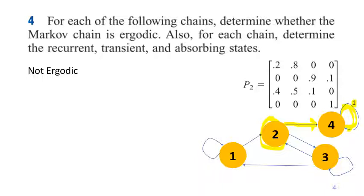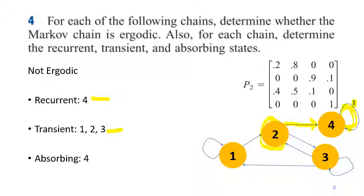So 1, 2, 3, there are all transient states, and then the recurrent one is 4, because 4 is not transient. And then 4 is also an absorbing state, because once you've reached 4, the probability of returning to 4 again is 1. So that is the definition of an absorbing state.